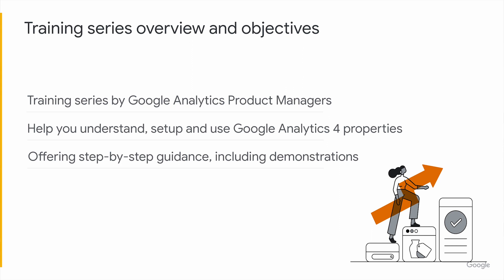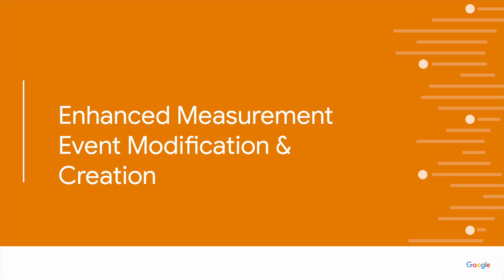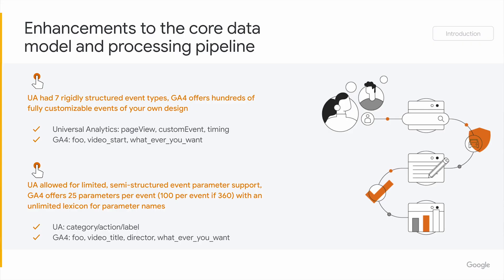We'll be offering some step-by-step guidance, including some demonstrations in some of these trainings, and we hope you enjoy them. Today we'll be covering a number of topics: enhanced measurement, as well as event modification and creation, event parameter examples, conversions and audiences, organization and governance, and lastly, privacy controls. We'll start with enhanced measurement as well as event modification and creation.